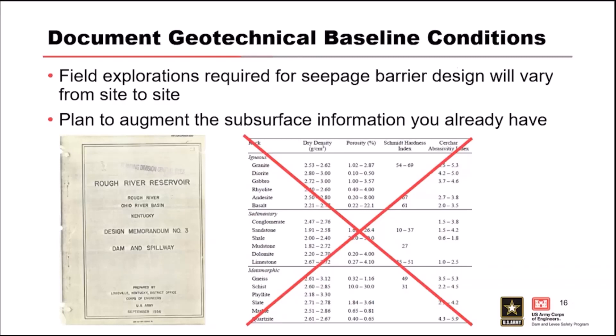It's recommended to organize that data into a database and to identify any necessary data gaps to develop a scope to get additional information. Finally, don't use general North American soil or rock properties. This is a dam modification — this is a life safety issue. Don't pull properties from tables or charts; put the money into your investigation, figure out what these properties are, and ensure you have enough data to establish ranges and variation of the materials at your project.